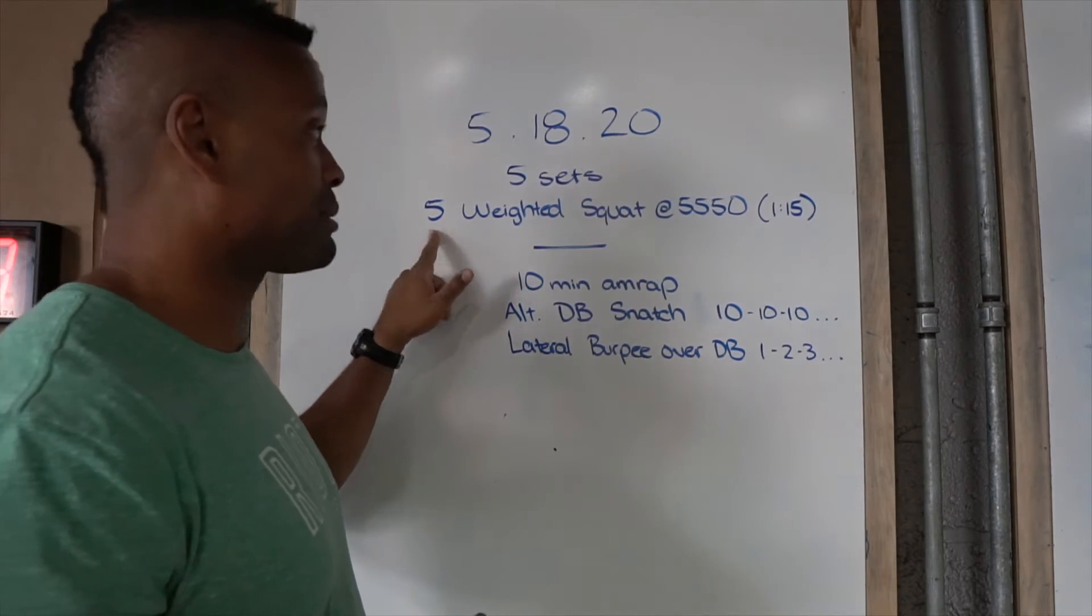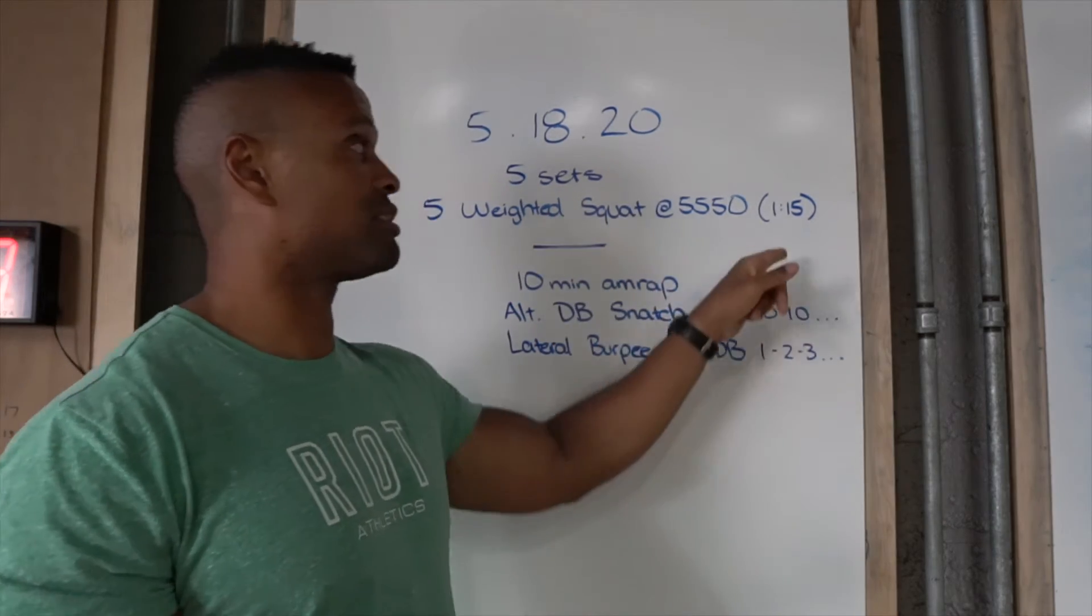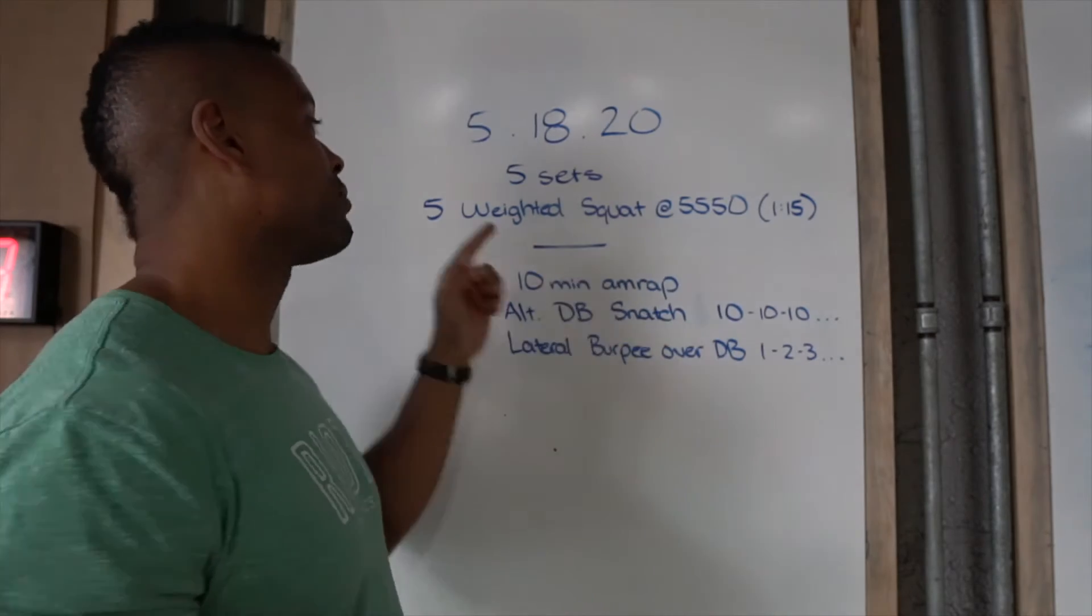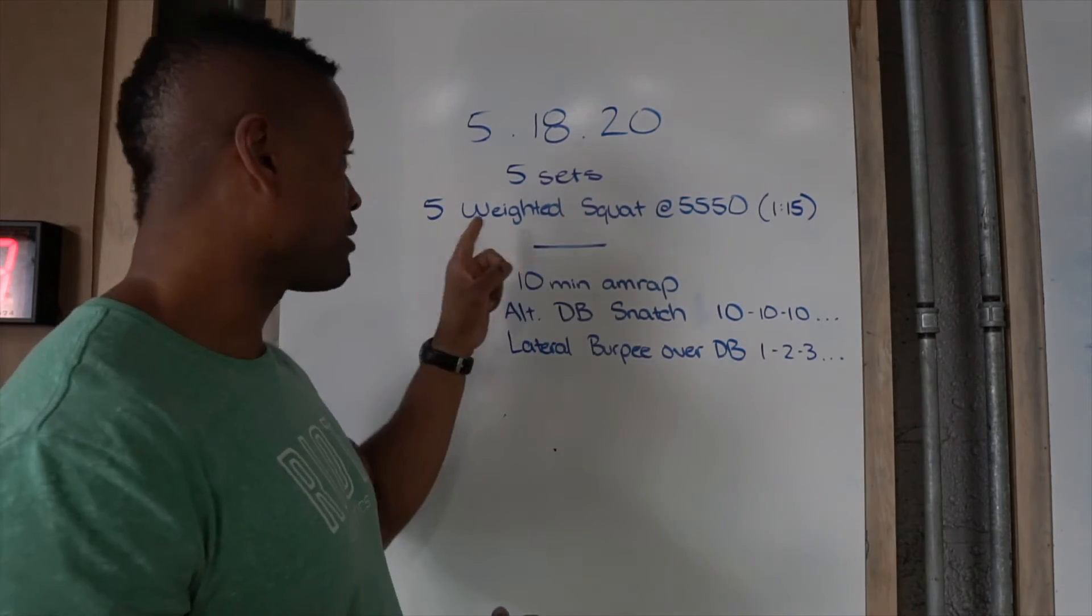So all five reps will take a minute and 15 seconds, so that's where the one-to-one work-to-rest ratio comes in. So a 5-5-5 weighted squat for five sets.